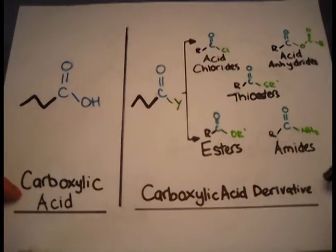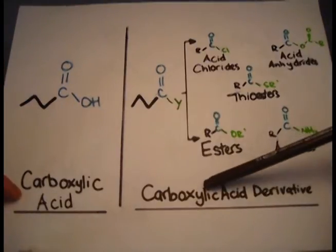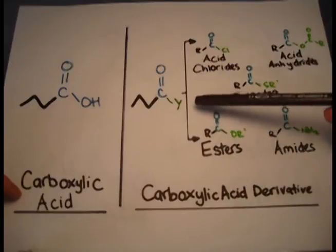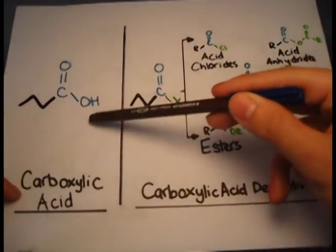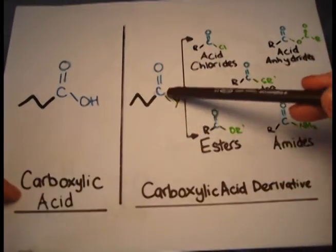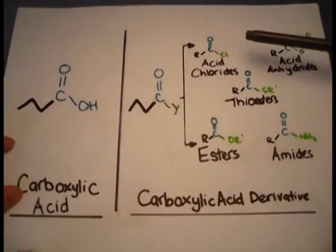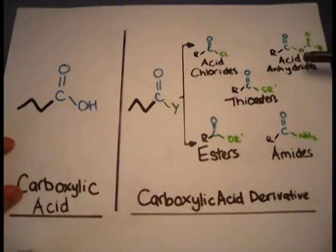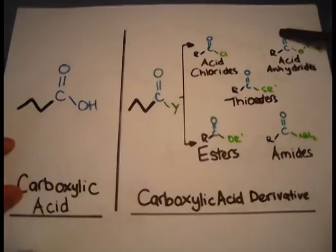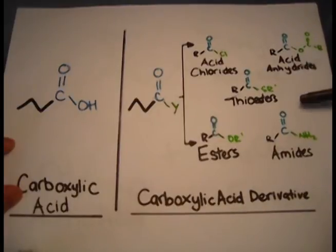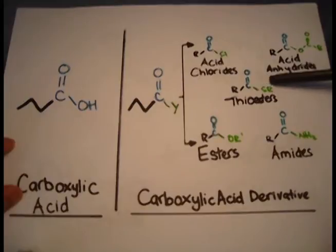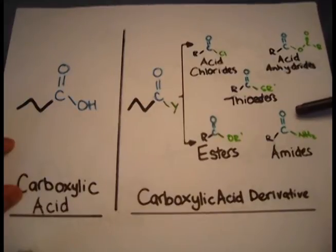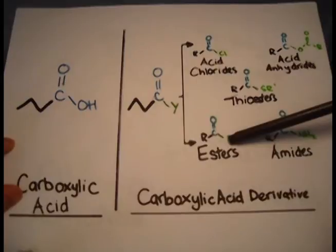So what makes a carboxylic acid derivative? Well, what you've got to do is replace this OH group with a Y. And what is this Y? Well, it could be chlorine, making an acid chloride. It could be an acid anhydride — so that's just like a mirror image right here. Or it could be a thioester, connected to a sulfur and another R group. Or it could be an amide or an ester.